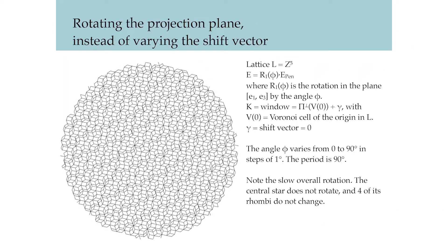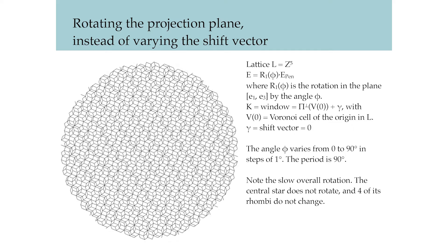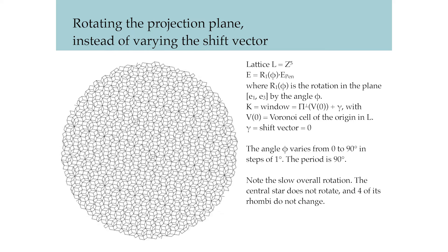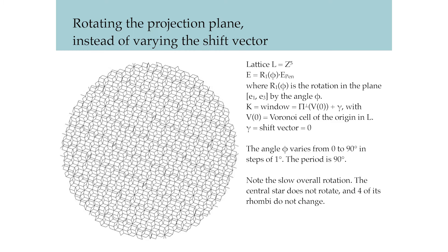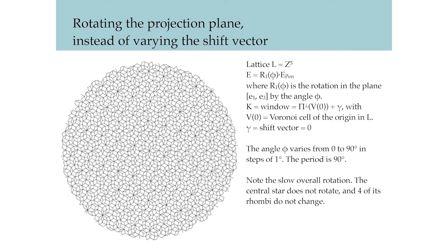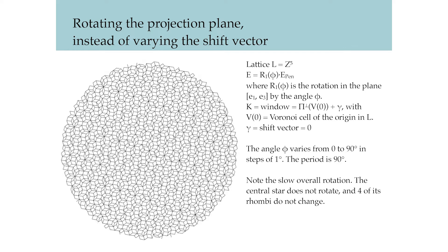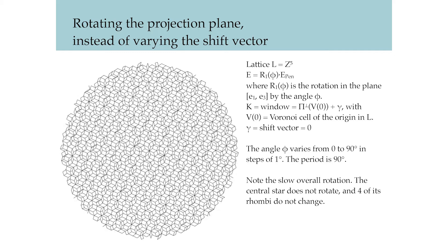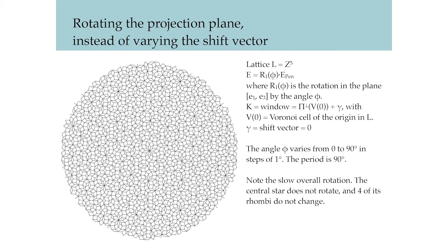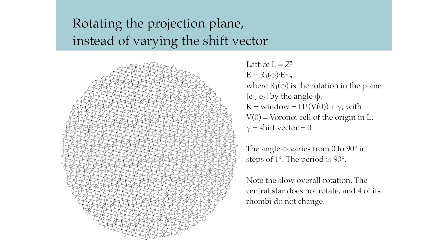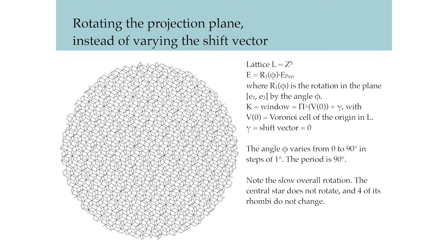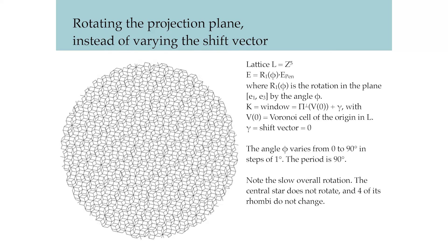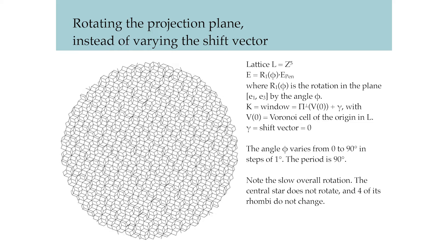In this animation, we keep the gamma shift vector to be zero — in other words, alpha, beta, and omega are all zero. Instead of translating the cut window, we rotate the projection plane, or relatively, we rotate the Z5 lattice in the U1, U3 plane. Since this rotation changes the physical space, the projected tile shapes change. The angle phi varies from zero to 90 degrees in steps of one degree. The period is 90 degrees. Notice the slow overall rotation — the central star does not rotate, and four of its rhombi do not change.